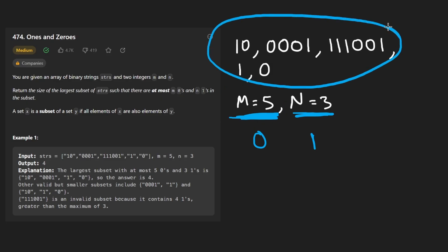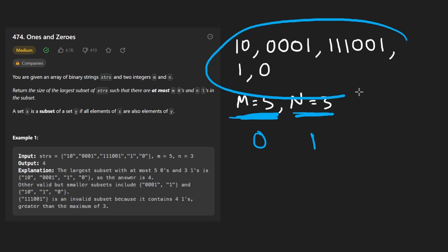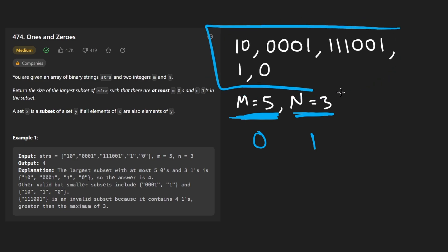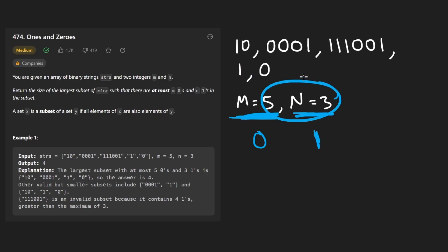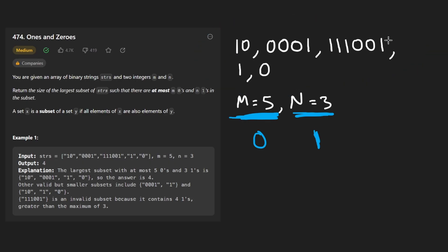The first thing you might consider is: can we just take all five of these strings? Well, how many zeros would we get? We'd get seven zeros — that's too many. And how many ones would we get? We'd get seven ones, more than we're allowed. So we definitely can't take all five of these strings.